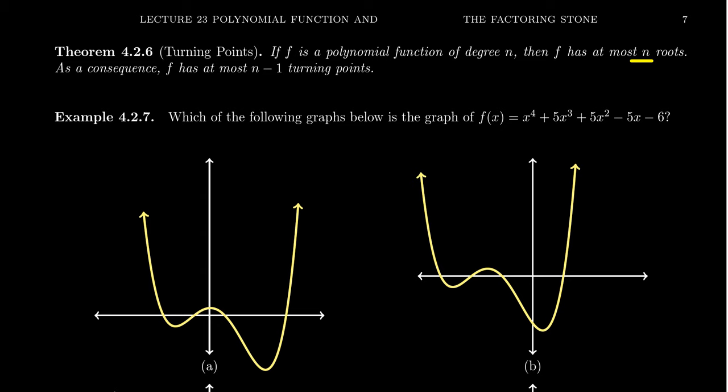A function can never have more than n x-intercepts on its graph. A consequence of this has to do with turning points. A consequence that every polynomial has at most n x-intercepts, where n is its degree, is that the number of turning points is at most n minus 1.